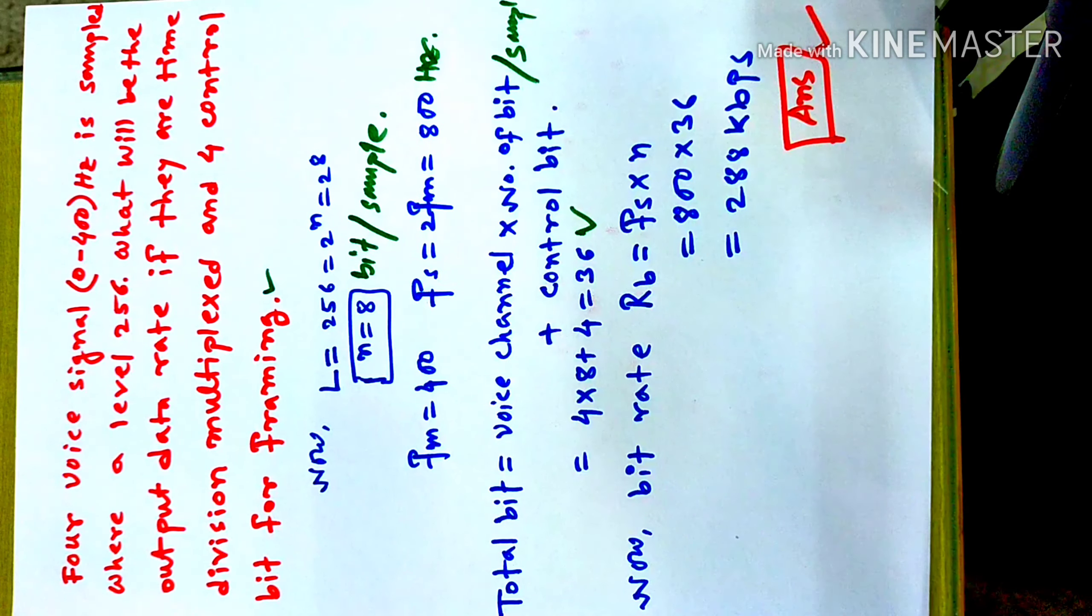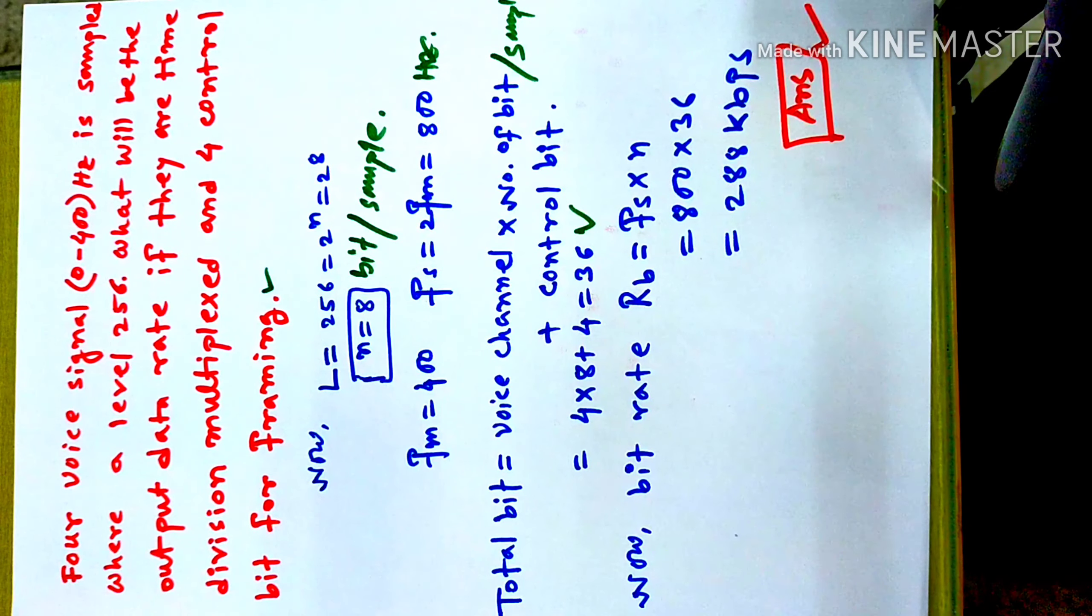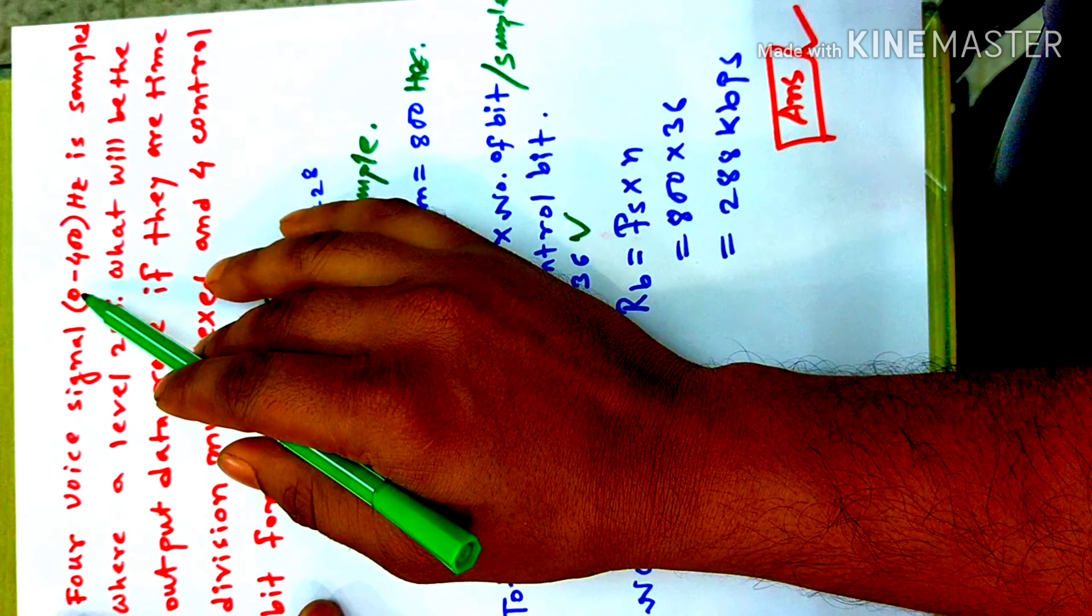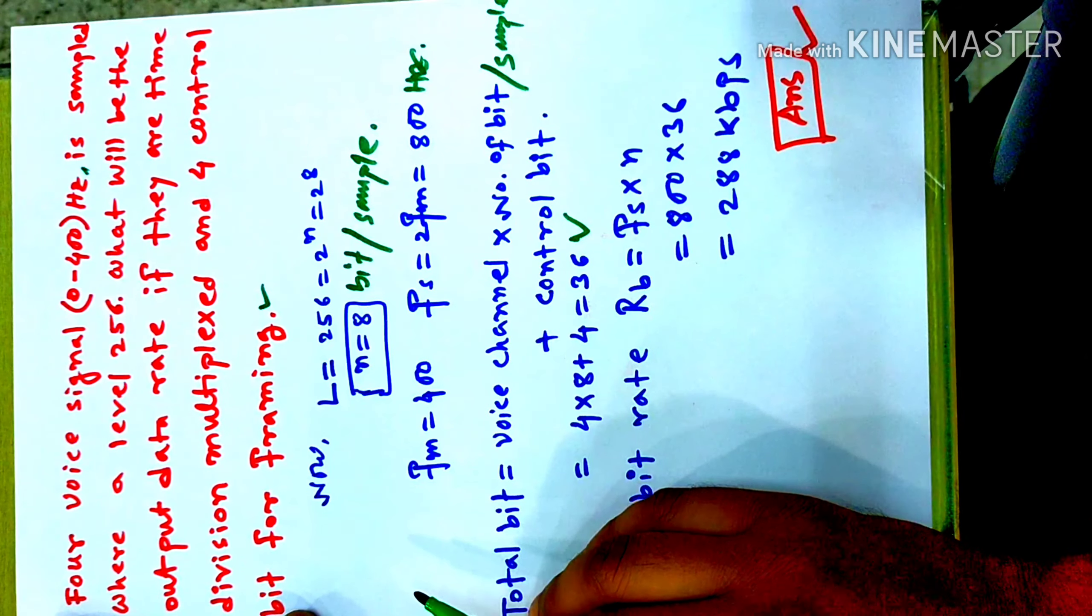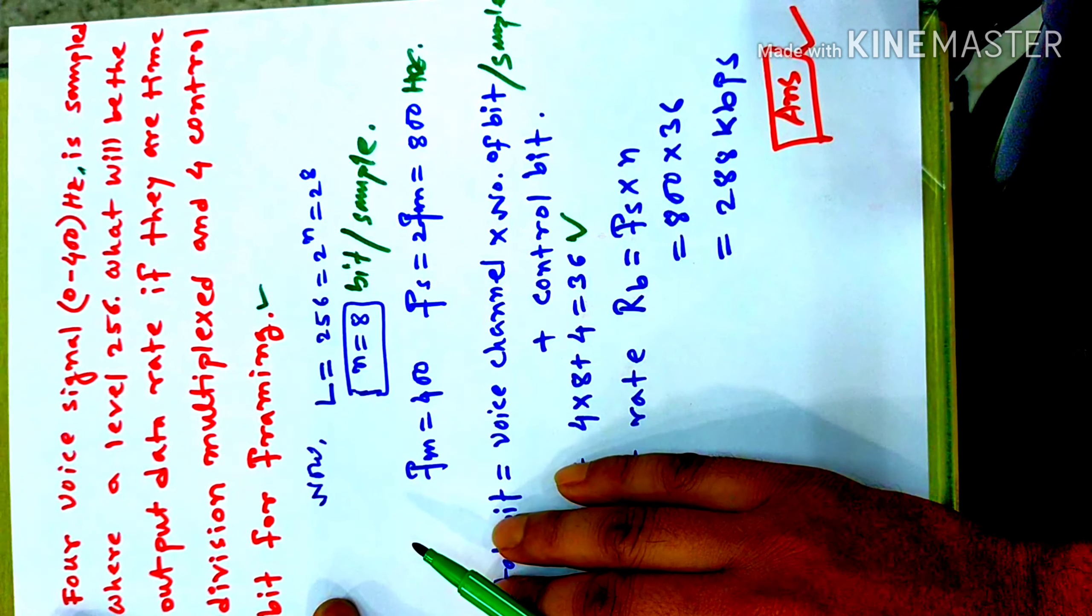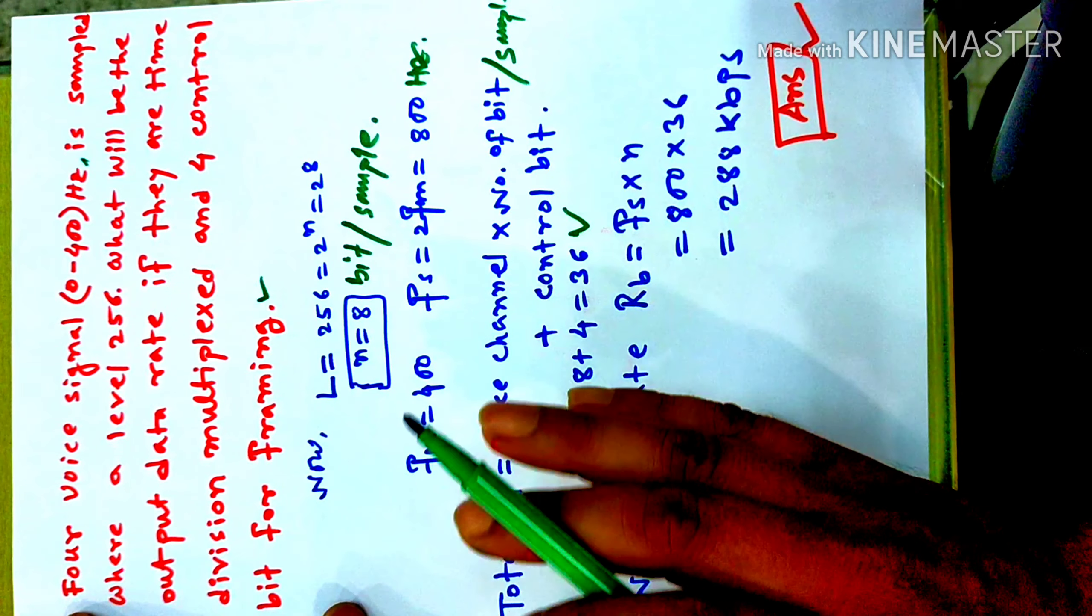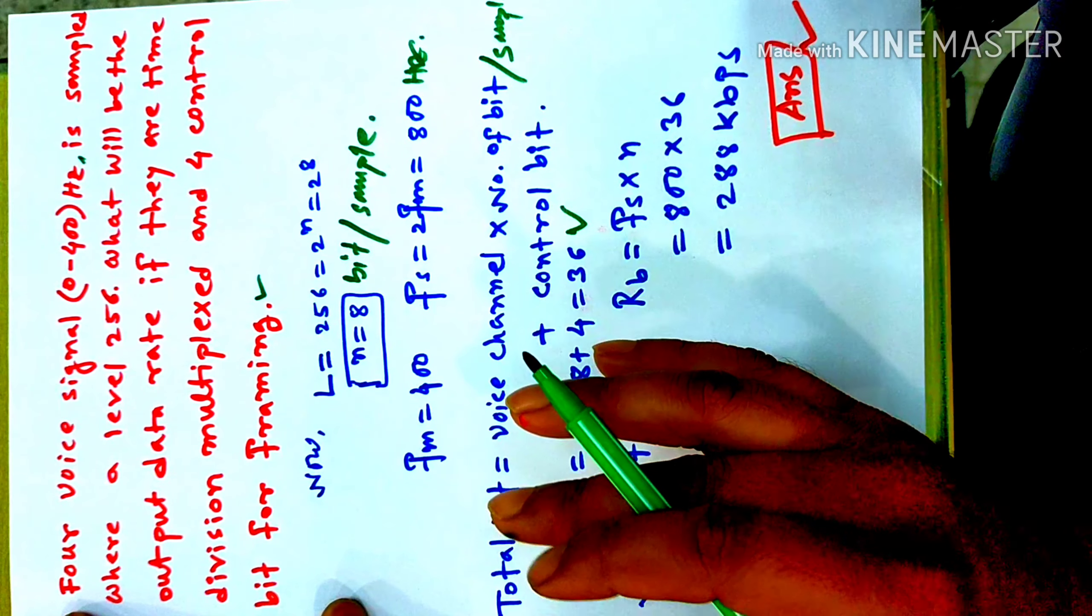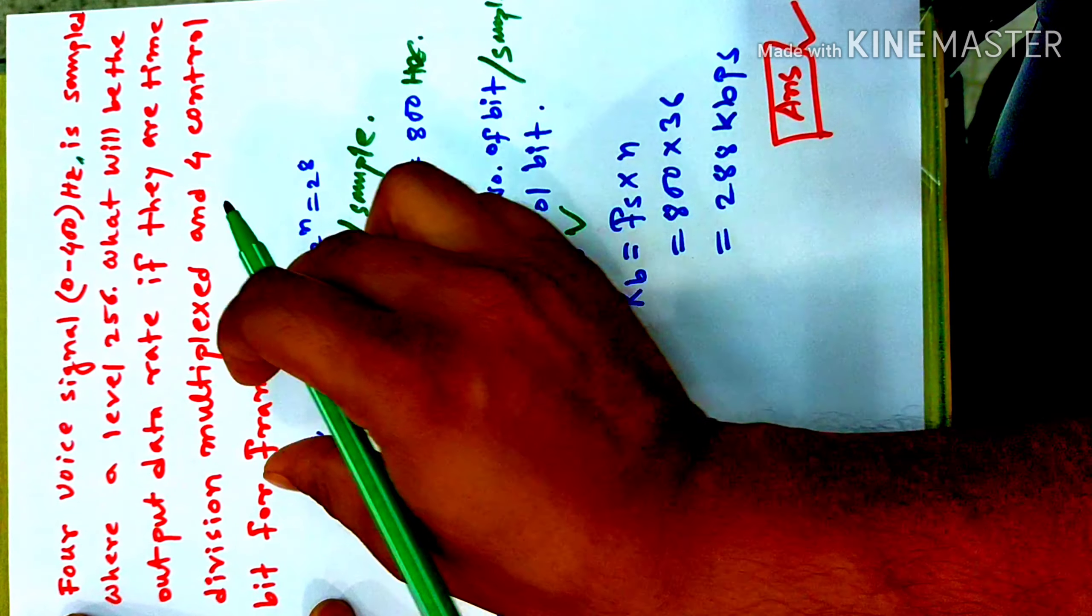Welcome everyone to my YouTube channel Telecommunication. After different math, need to discuss. I want to discuss: four voice channels are sampled where level 256. What will be the output data rate if they are time division multiplexed and four control bits for framing?